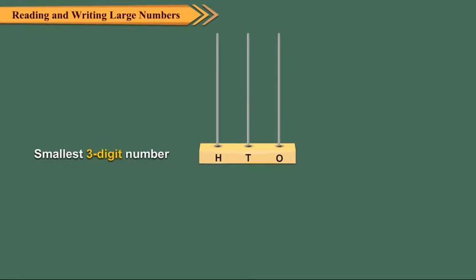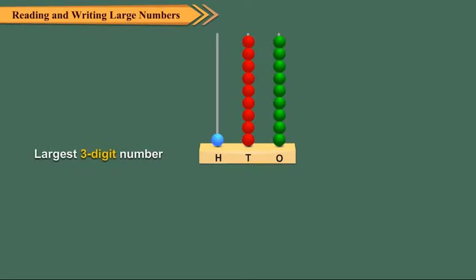Smallest three-digit number is 100. Largest three-digit number is 999.